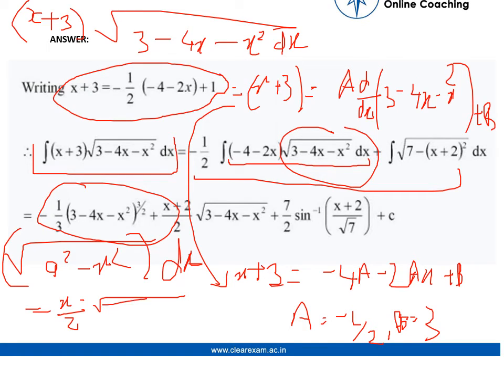Now, in this under root equation, we write the original value of the under root, which was 3 minus 4x minus x square plus a square by 2, this is a square value into sine inverse of x by a.